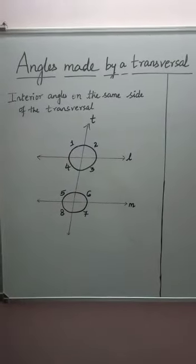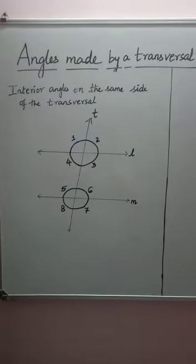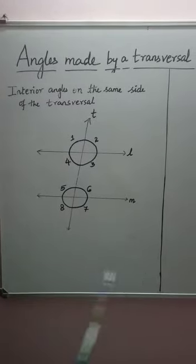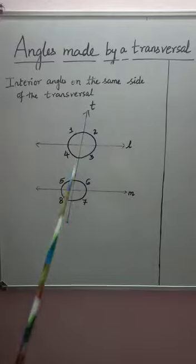Last set of angles made by a transversal are the interior angles on the same side of the transversal. Now see the same figure again. Two lines L and M and the transversal T.